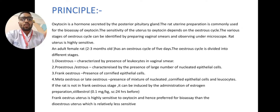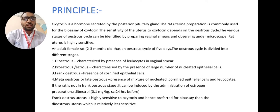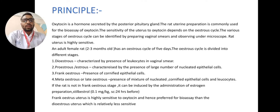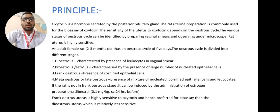If the rat is not in the frank estrus stage, it can be induced by the administration of an estrogen preparation, i.e., stilbestrol at 0.1 mg per kg, administered 24 hours before. Frank estrus uterus is highly sensitive to oxytocin and hence preferred for bioassay over the diestrus uterus, which is relatively less sensitive.